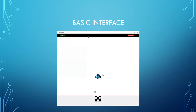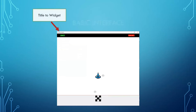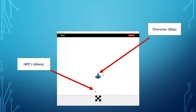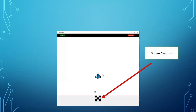The game has three different sections. The first section is the top section, the second is the playground level, and the third is the user interface. We're going to have a title widget, a score and lives left display, NPCs which are the aliens, a ship, and game controls.